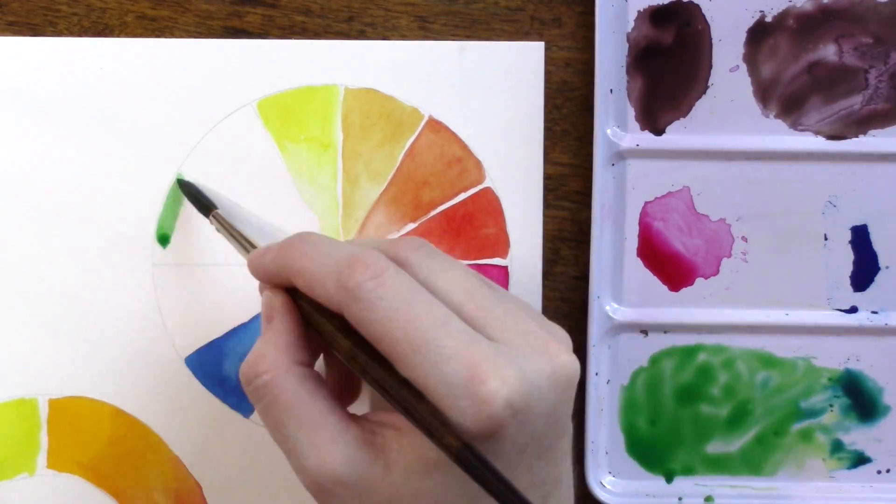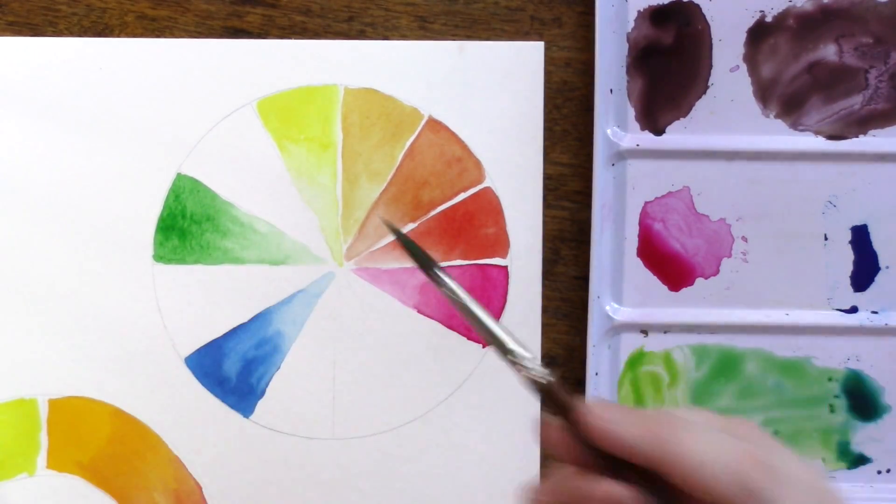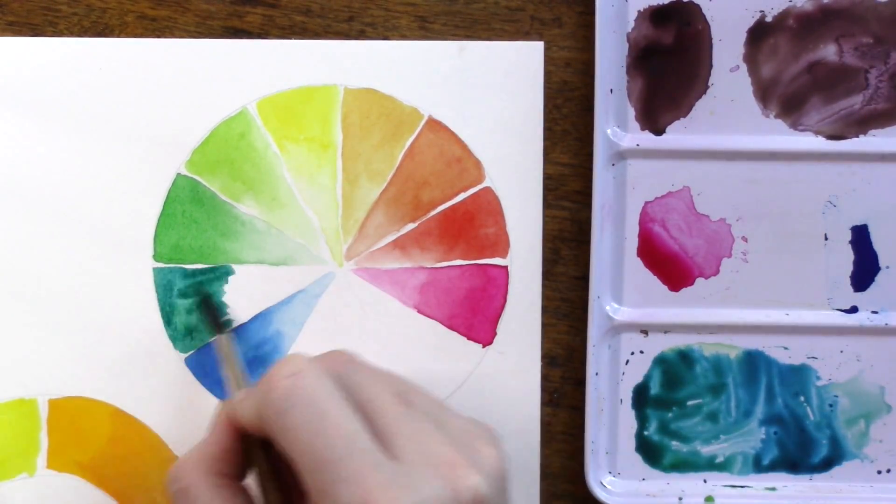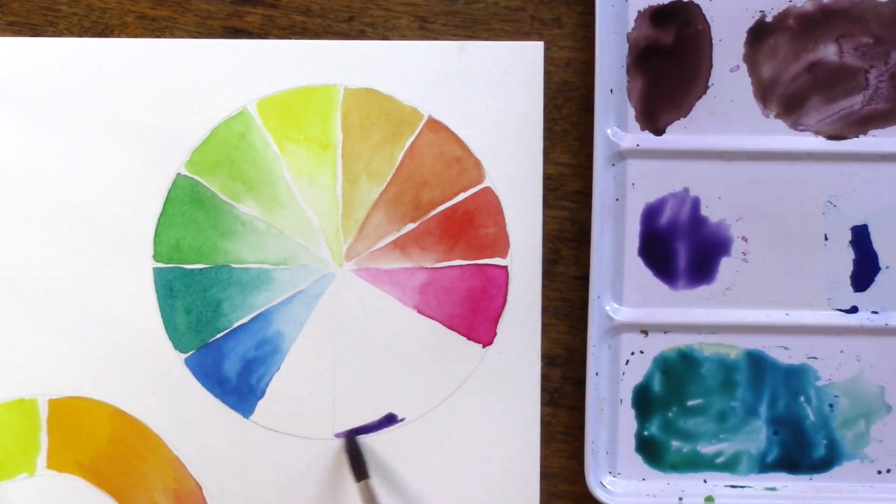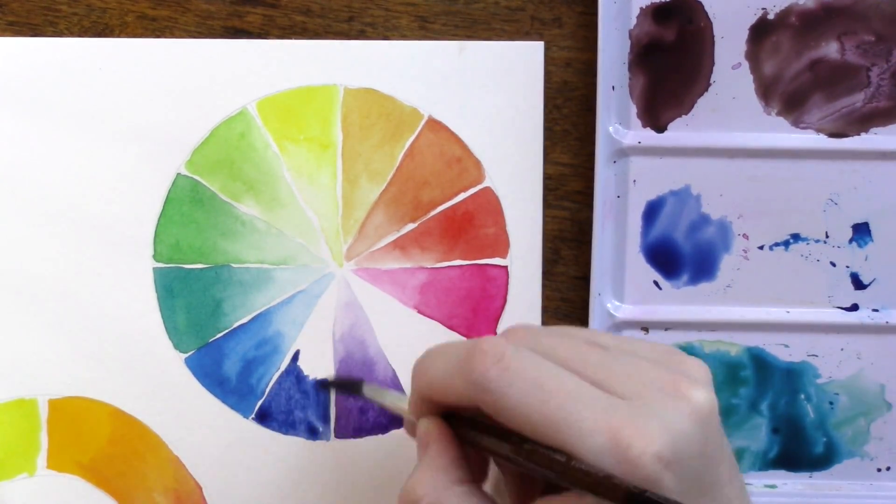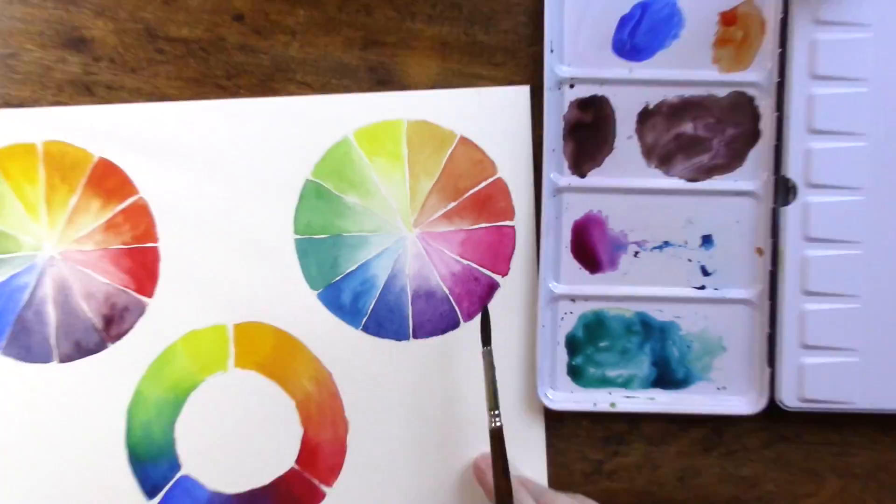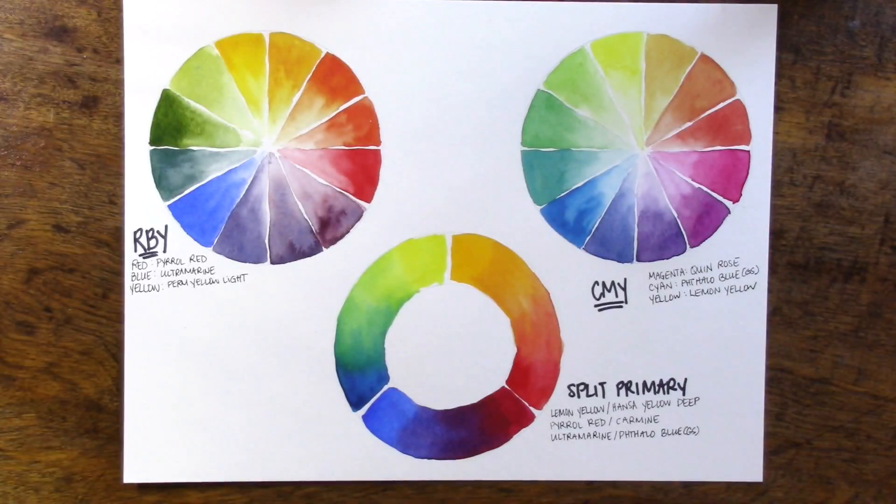That is by using cyan, magenta, and yellow. Where have you heard those colors before? Chances are if you've ever had an inkjet printer, you know that those are the colors that the cartridges come in. That's because those are the primary colors that a printer needs to make every other color.